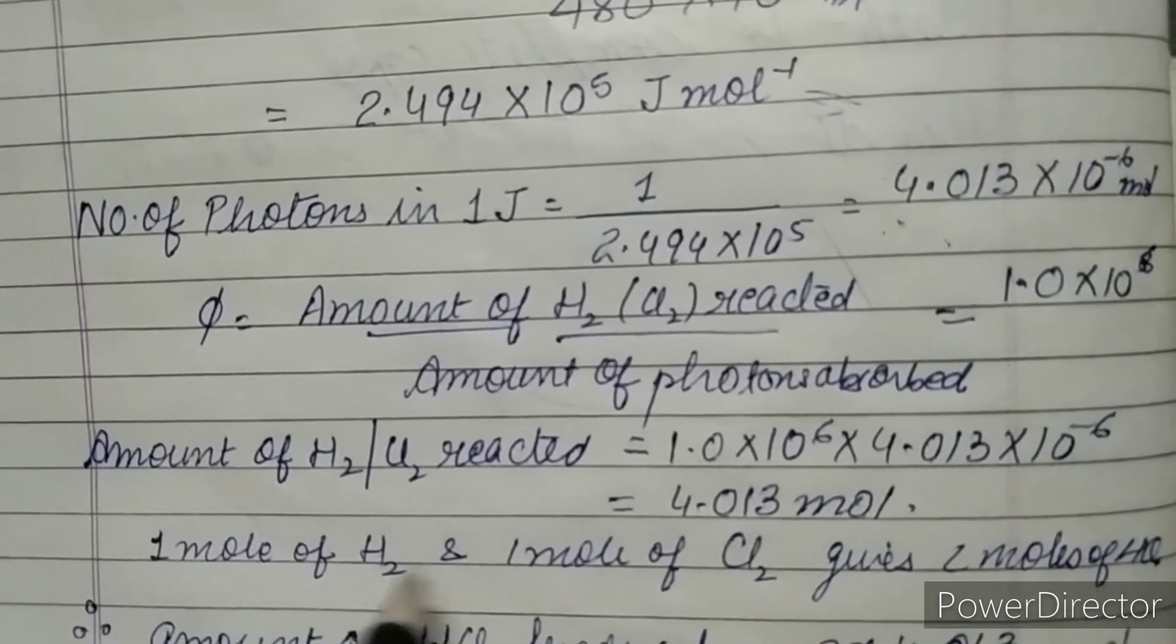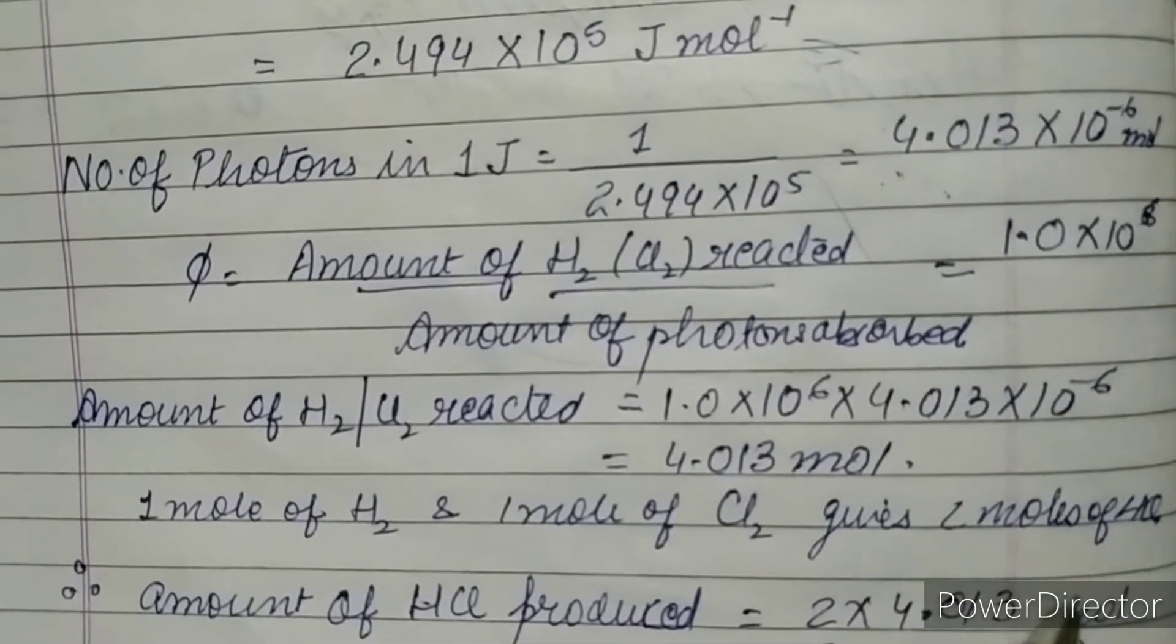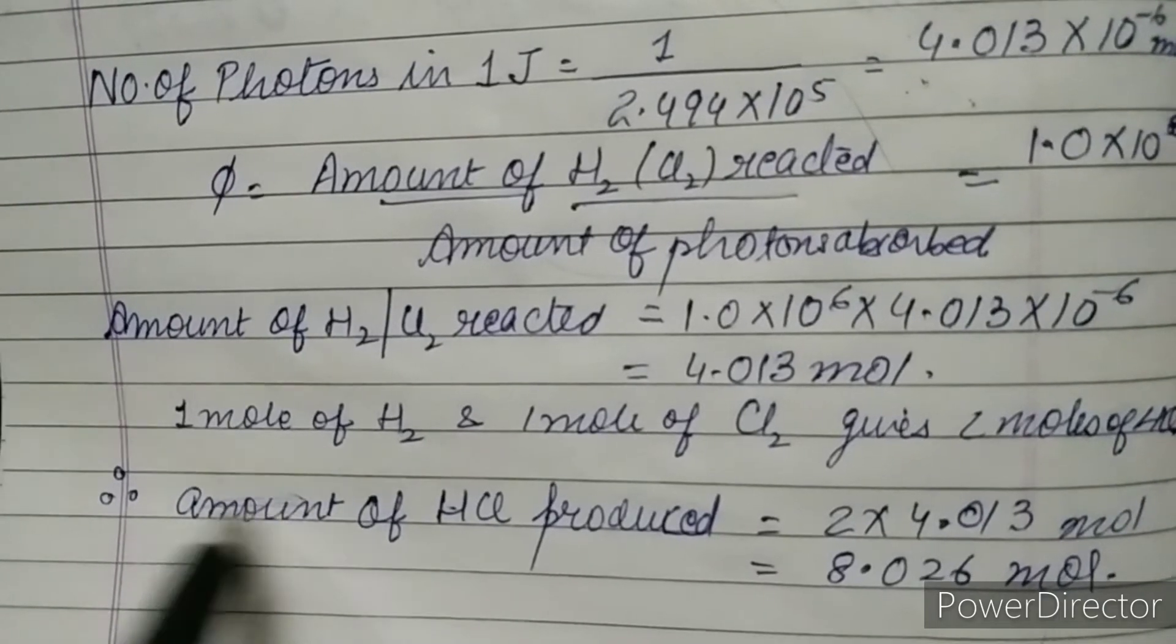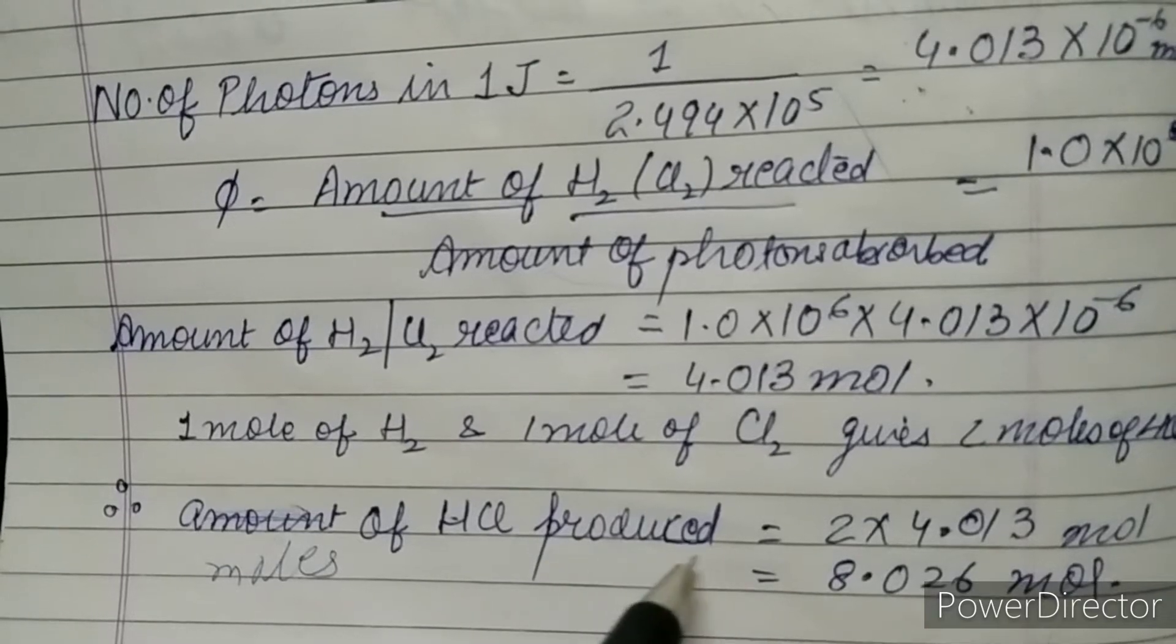Now from the equation it is quite clear 1 mole of H₂ is reacting with 1 mole of Cl₂ to give 2 moles of HCl. Now please correct it, there should be moles, okay, so here it is moles.